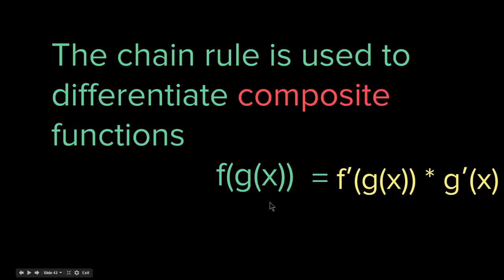If we have another function inside g of x, so if it is f of g of h of x, the differentiation would be f prime of g of h of x, times g prime of h of x, times h prime of x. That would be the differentiation of that particular function.